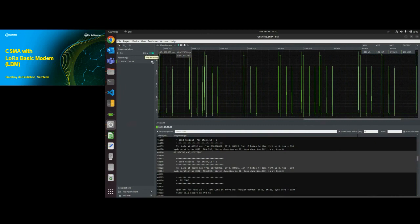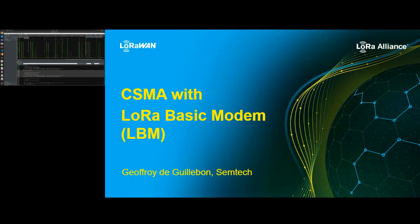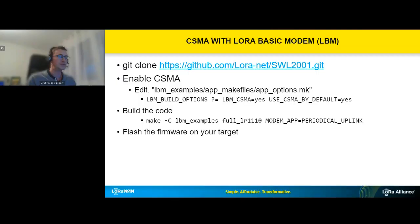It's very easy to enable CSMA. To summarize: git clone the project SWL2001, then enable CSMA in the app options with LBM_CSMA set to yes and USE_CSMA_BY_DEFAULT to enable CSMA directly inside the code. Then build your example and flash your firmware to your target.